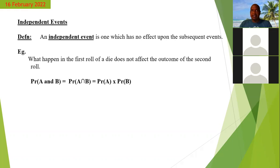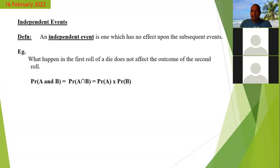All right, so let's say the first event is throwing a die. We throw the die one time and we get, say, an ace. Then we take the die and throw it again. The outcome of the second toss, or the second throw of the die — would the first throw affect the second throw?